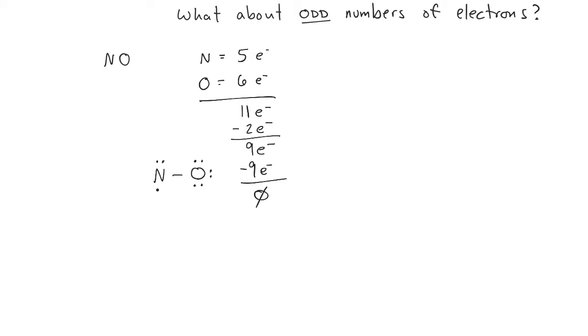So the only thing we can do is go ahead and form a double bond between the nitrogen and the oxygen, which will give nitrogen a total of seven electrons, which is the best that it can do.